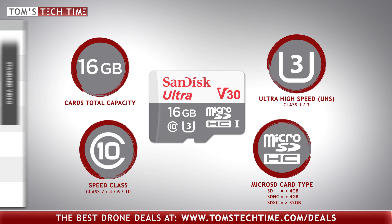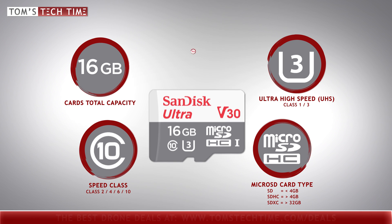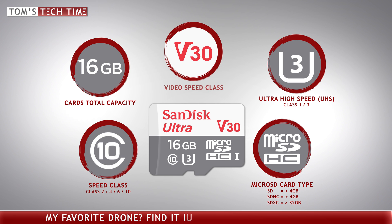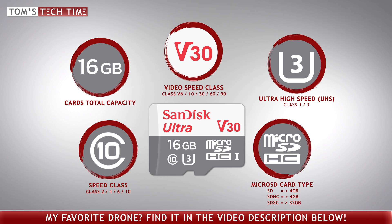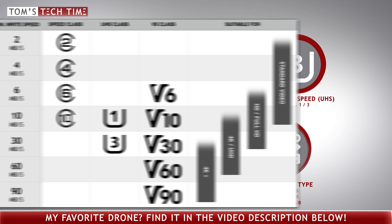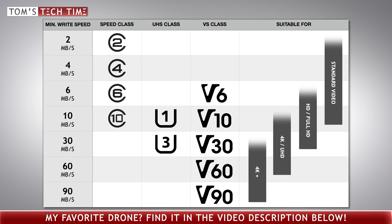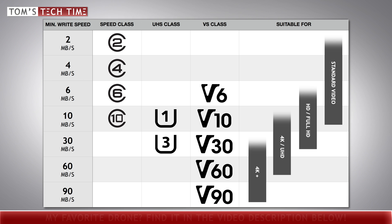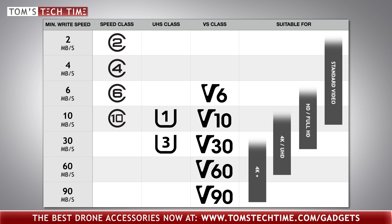Some of the very new cards have another speed rating printed onto them — the VSC, video speed class rating. There are different speed ratings: V6, which is equivalent to class 6; V10, which is equivalent to UHS class 3; and next to that we find V60 and V90. The number tells you the minimum read and write speed directly. V10 means the card can read and write with a minimum speed of 10 megabytes per second, while V90 allows a minimum read and write speed of 90 megabytes per second.